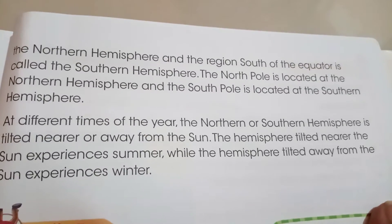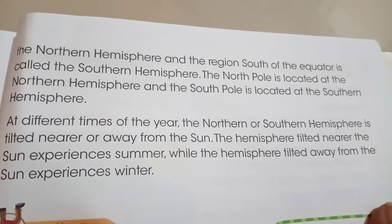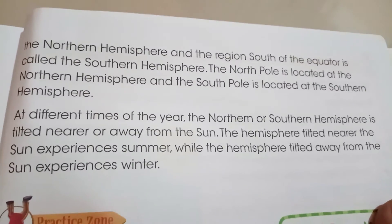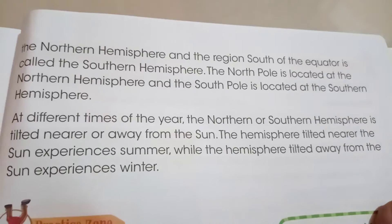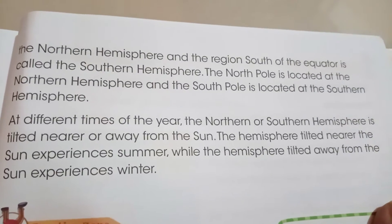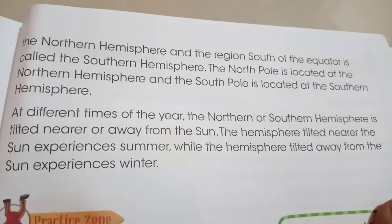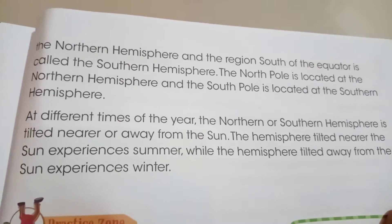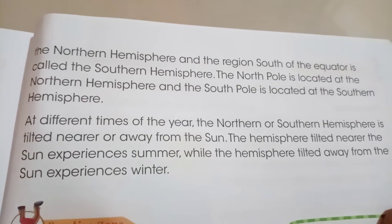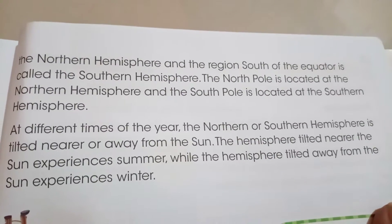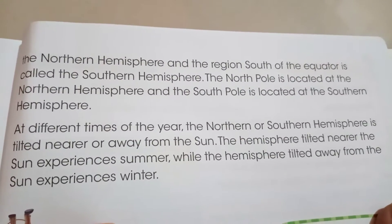At different times of the year, the northern or southern hemisphere is tilted near or away from the sun. The seasons of the year happen because of this rotation and tilt of the Earth.